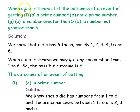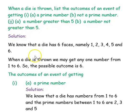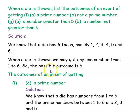Our first question is: when a die is thrown, list the outcomes of an event of getting a prime number, not a prime number, a number greater than 5, and a number not greater than 5. We know that a die has 6 faces, namely 1, 2, 3, 4, 5 and 6. So when a die is thrown, we may get any one number from 1 to 6. So the possible outcomes are 6.